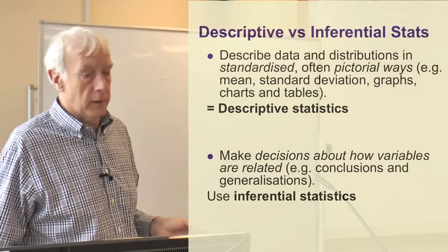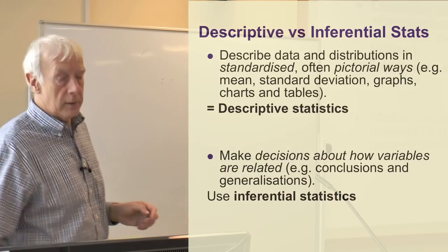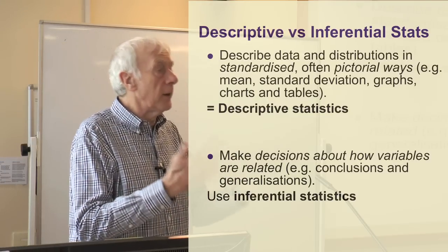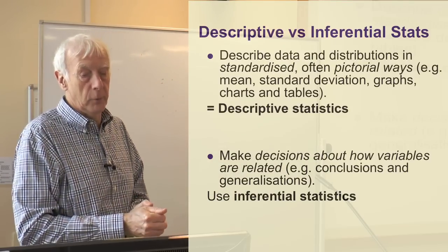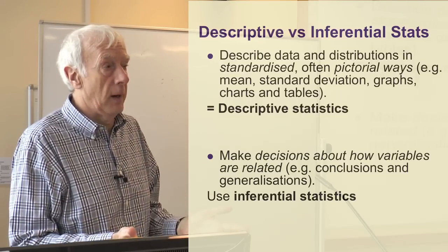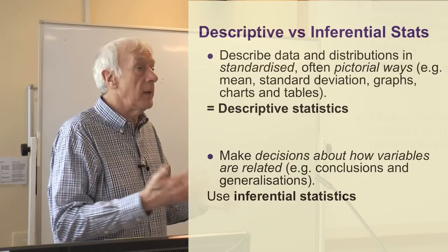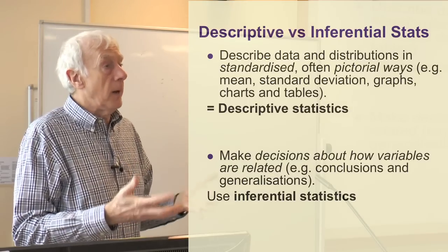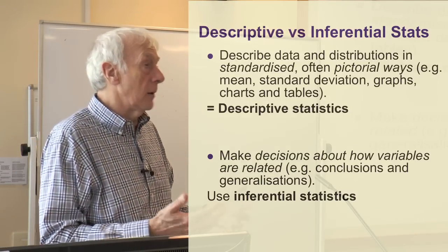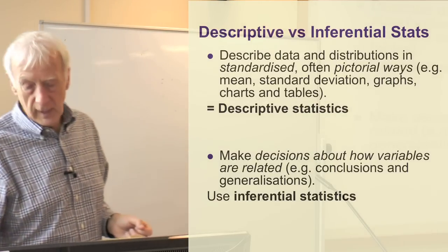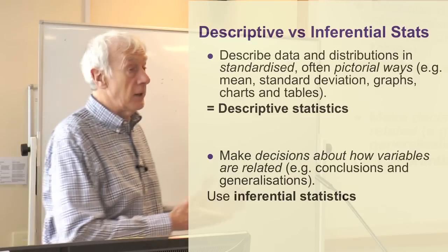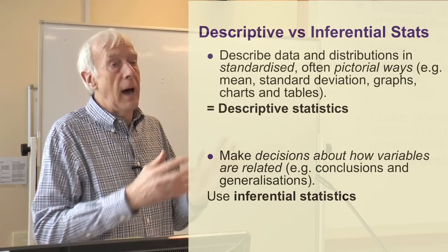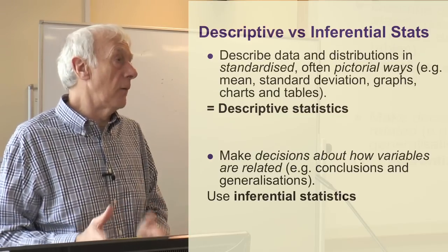What I'm going to talk about this week is a different kind of statistic — the inferential. This enables us to make decisions about how variables are related: how one variable in your data relates to another. It allows us to draw conclusions or even make generalisations, meaning taking it from your sample to the population from which that sample was drawn. We can make decisions about whether those relationships are significant based on these inferential statistics. Chi-square is one of those inferential statistics — called inferential because we can infer a certain kind of significance based on the values we get.